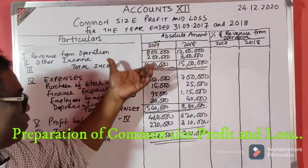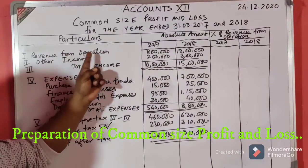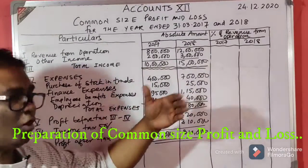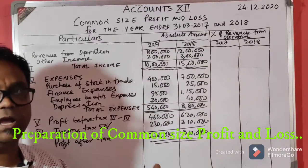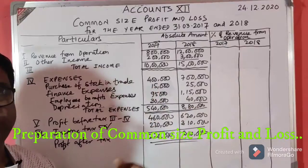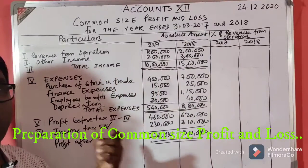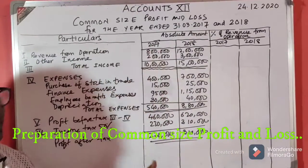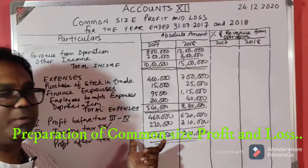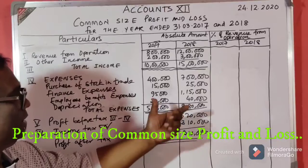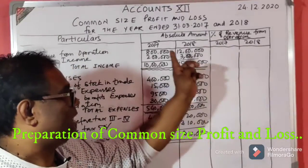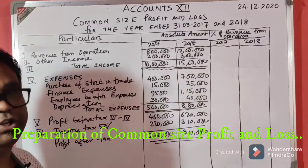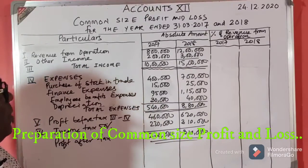This is the same as comparative profit and loss, but in comparative profit and loss we compare two years' data and find changes. Here in common size profit and loss account we are not comparing but expressing each item as a percentage. The first column is the base year 2017 and the second is 2018. Every item's percentage is calculated in terms of revenue from operations.